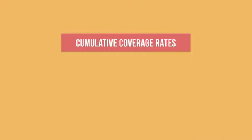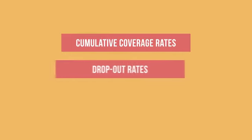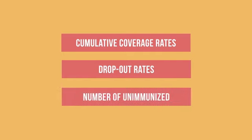Look for three important pieces of data: the cumulative coverage rate for pentavalent 1 or pentavalent 3, the dropout rate between pentavalent 1 and pentavalent 3, and the number of unimmunized infants and pregnant women.